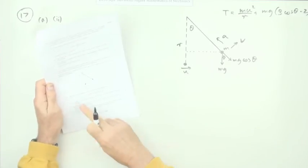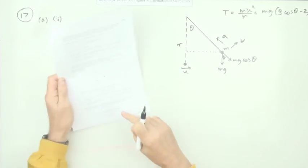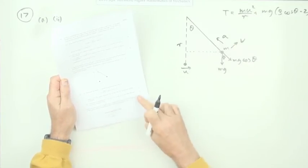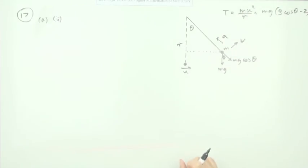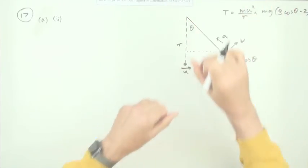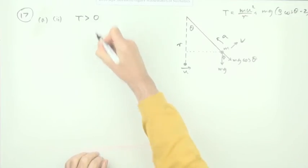This next part, part two, says determine a condition for u in terms of g and r so the particle actually makes it through a complete circle. Well, make it through a complete circle so long as it's still got some velocity at the top, or alternatively, so long as there's still some tension in the string by the time it gets to the top.